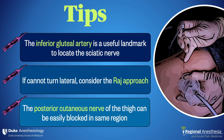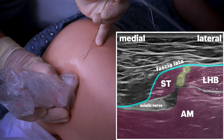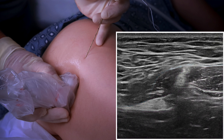Lastly, we know the posterior cutaneous nerve of the thigh is inconsistently blocked with the subgluteal approach. If you do need to get it — say for an above knee amputation — it can easily be blocked at the gluteal crease. You'll see it deep to the fascia lata between the long head of the biceps and the semitendinosus muscle as it emerges from the same plane as the sciatic nerve. In contrast to other cutaneous nerves in the body that run in the sub-Q fat, it runs down the posterior thigh deep to the fascia, giving off perforating skin branches as it goes, so look for it in that plane.